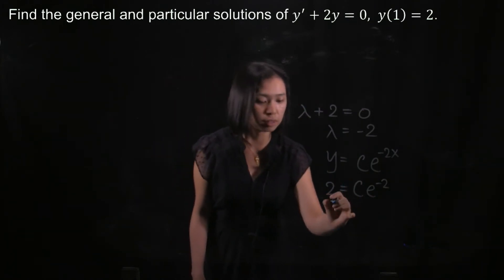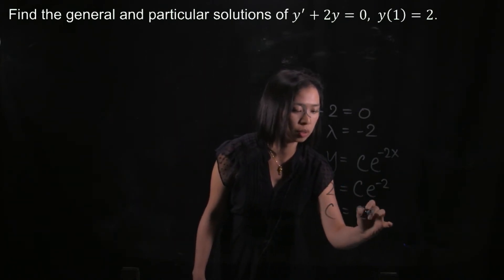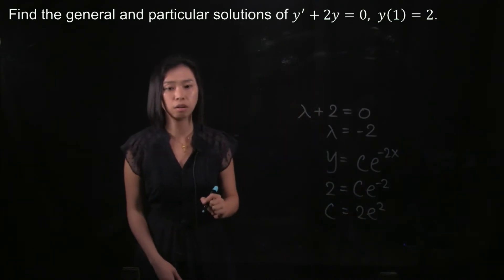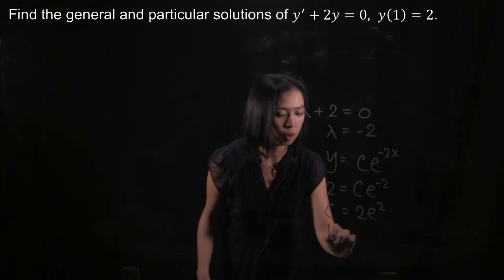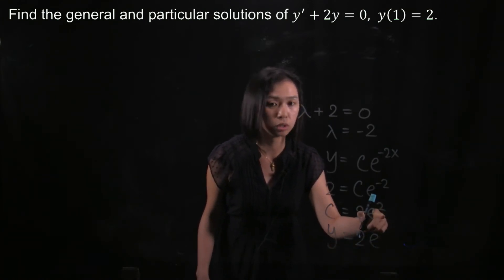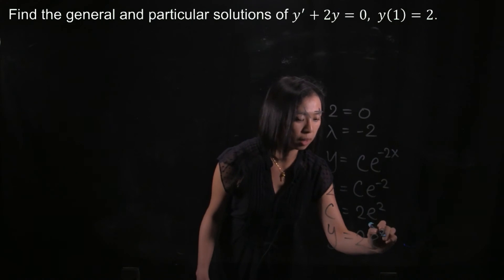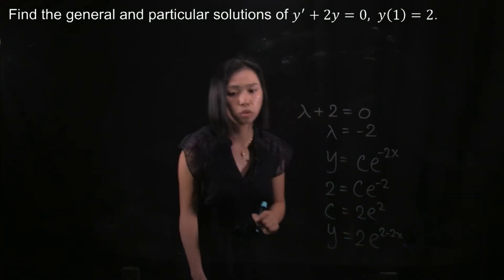And then we have to find the C, which is 2e^2. And then we substitute this C back here. We will have y = 2e^(2-2x).